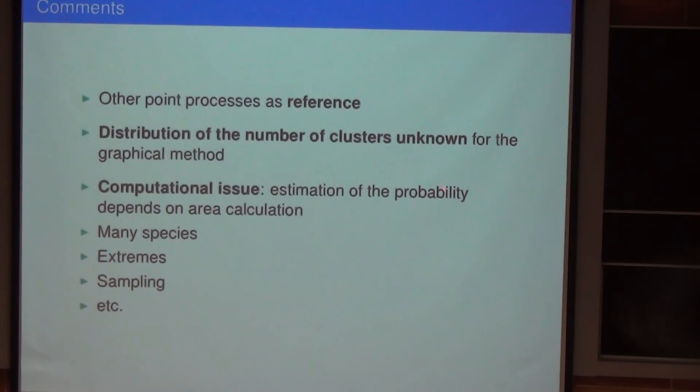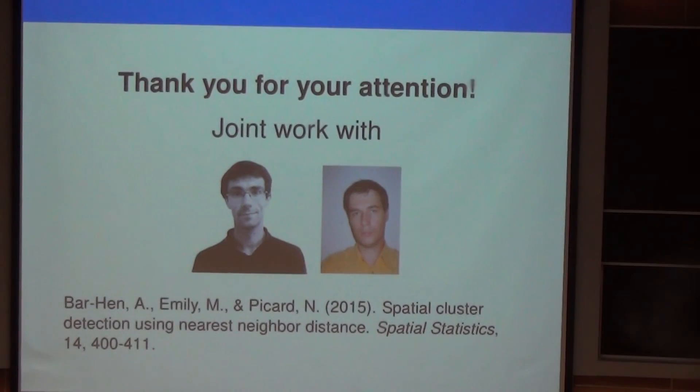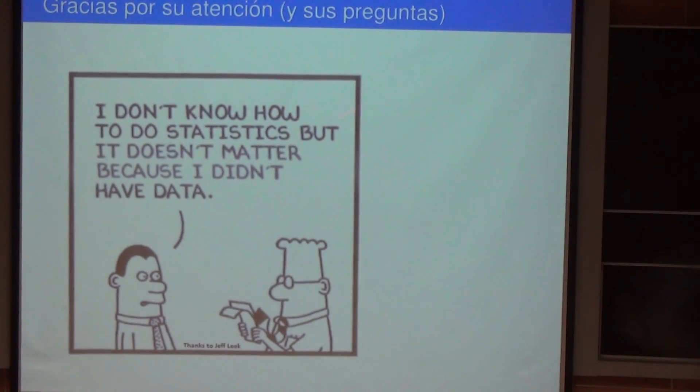So, just as a comment, distribution of number of clusters is unknown, except for the graphical way. The computational issue is quite important. We can't expect to extend it to many species, to extremes, to sampling. There are also many things. So ecology, especially if you include the genetic part, is also a source of statistical questions with practical implications. We do not have so much time, so I did the overview quite fast, and this is joint work with Nicolas Picard and Mathieu Milly. And just to close, thanks for your attention and your questions, and I'll try to keep a few questions to finish. Thank you.